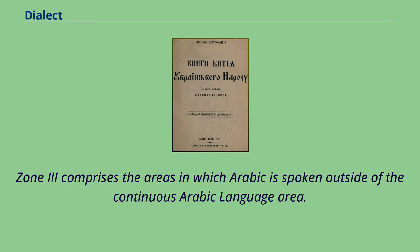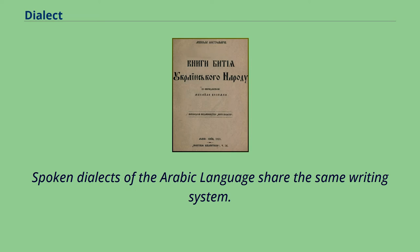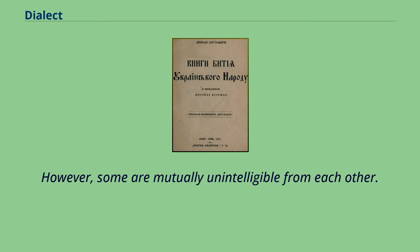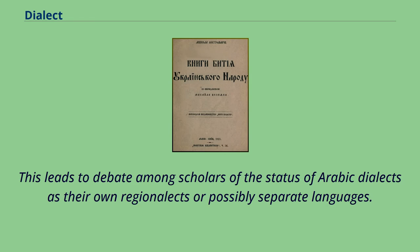Zone III comprises the areas in which Arabic is spoken outside of the continuous Arabic language area. Spoken dialects of the Arabic language share the same writing system; however, some are mutually unintelligible from each other. This leads to debate among scholars about the status of Arabic dialects as their own regional varieties or possibly separate languages.